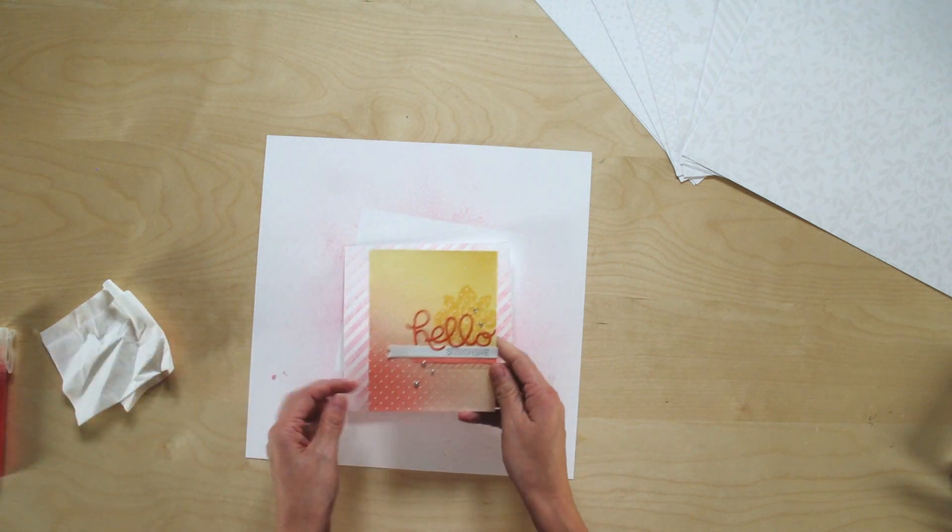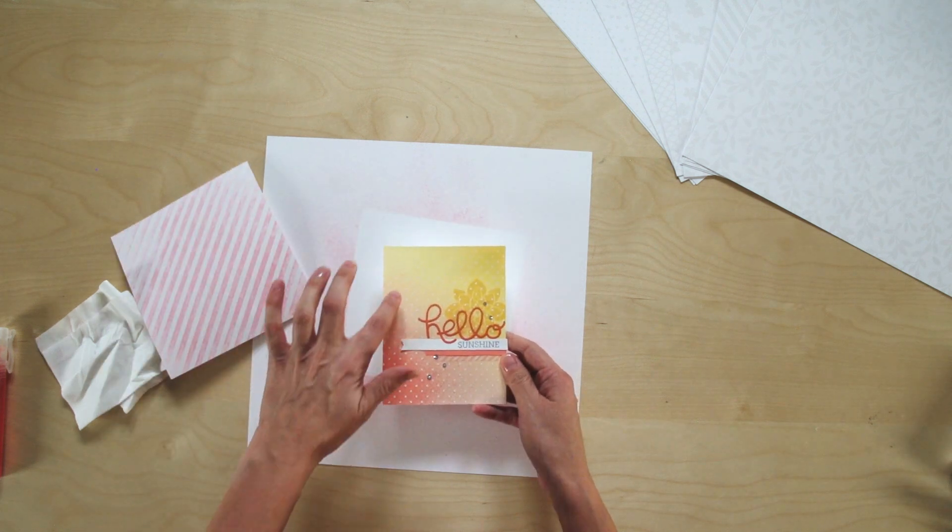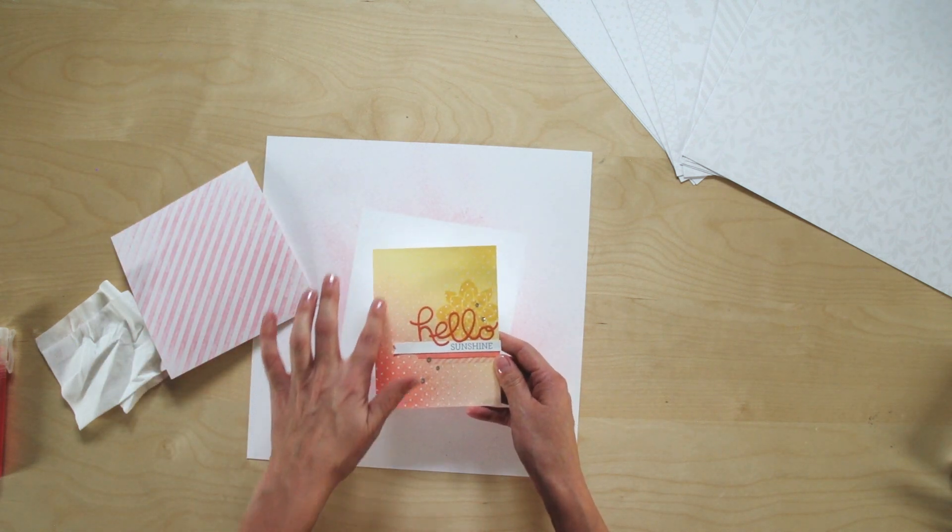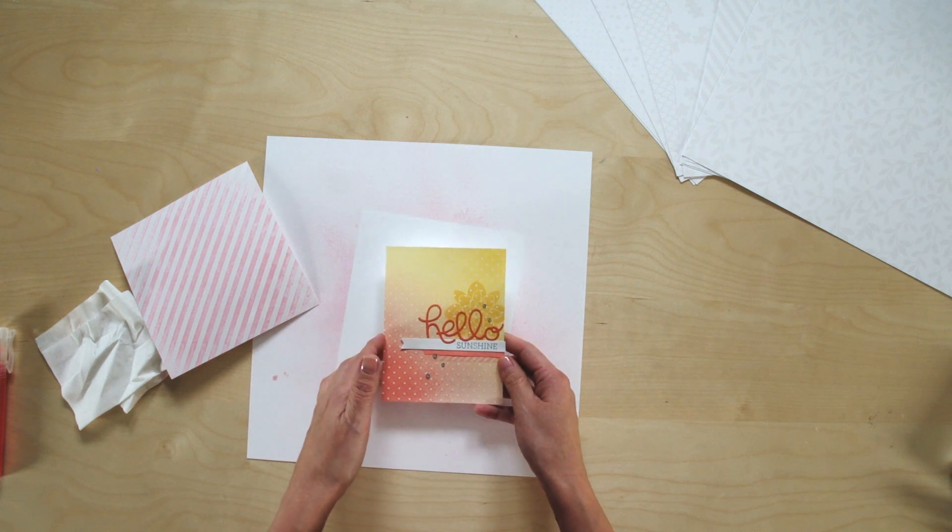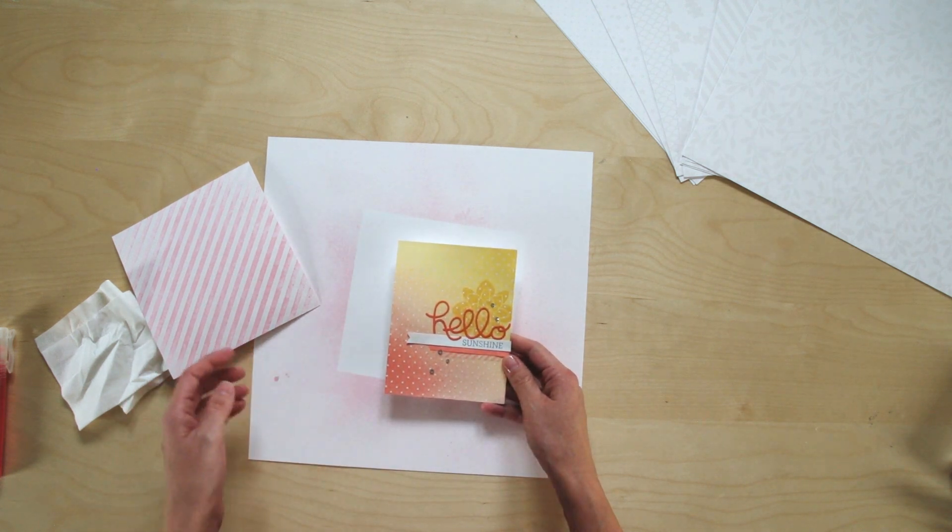Now spritzing is really fun because you can add different colors to it, and you can blend those together like we've done here with the corals and the daffodil. It will kind of blend together in the middle, so a lot of fun things you can do here with the spritzing technique.